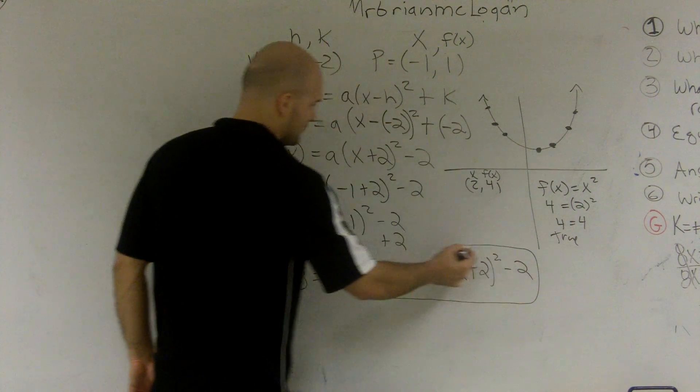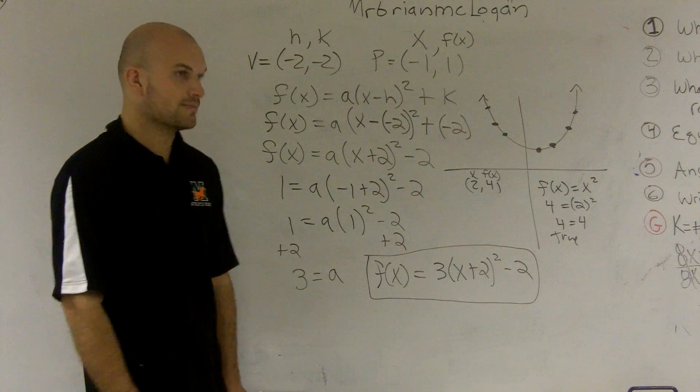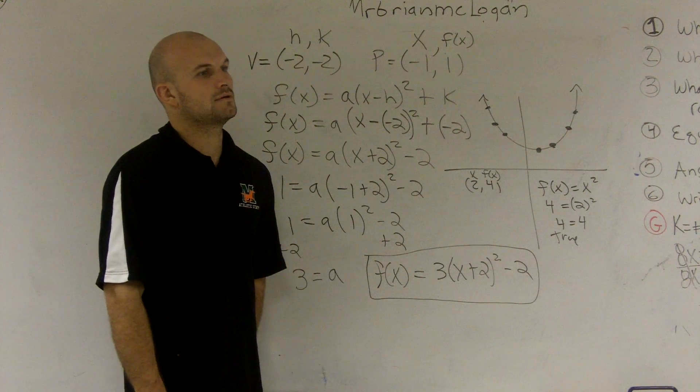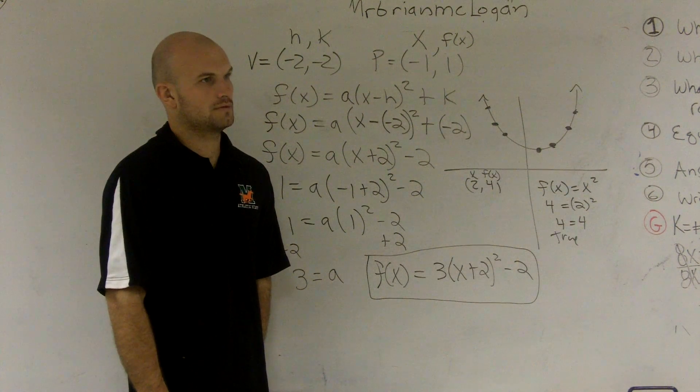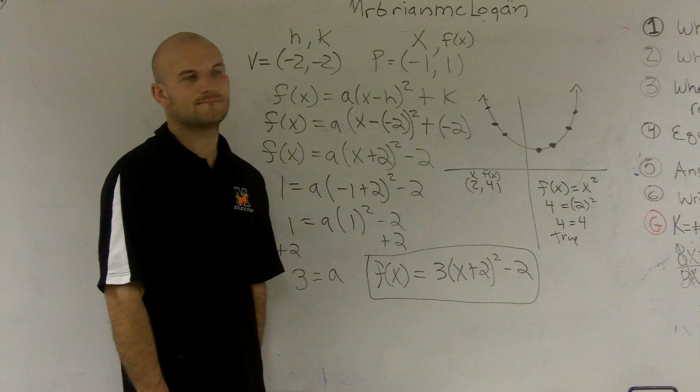So the standard form of this function, or of the polynomial, would be 3 times x plus 2 squared minus 2. Right. But do you kind of follow what I did? Yeah. Alright.